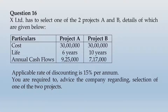X Limited has to select one of two projects, A and B. The cost of both projects is 30 lakhs. Project A has a life of six years and project B has a life of 10 years. Annual cash flows are 9,25,000 for project A and 7,17,000 for project B. The applicable rate of discounting is 15 percent per annum. You are required to advise the company regarding selection of one of the two projects.